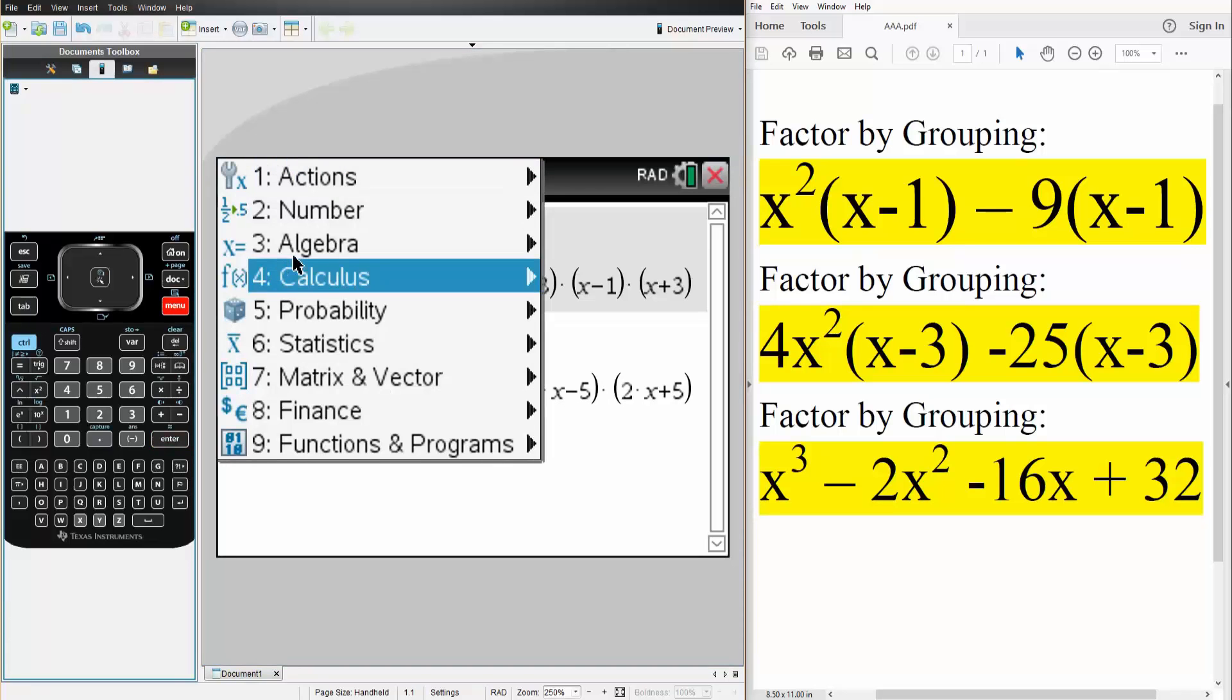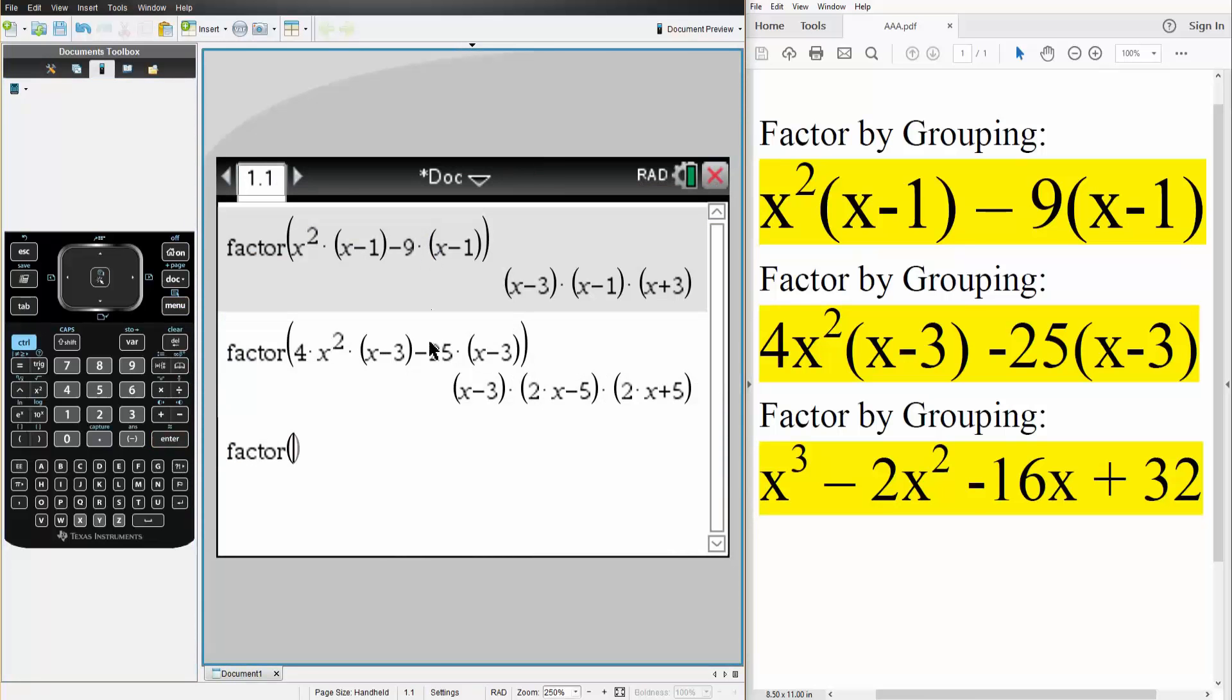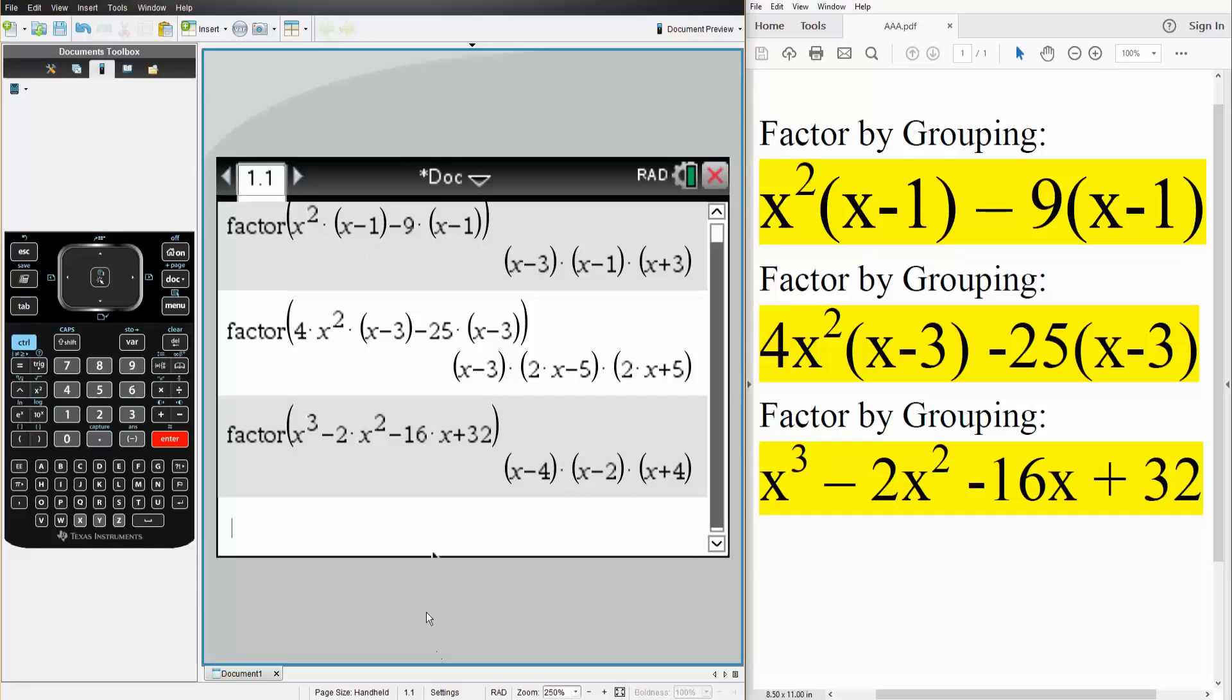Last problem, menu, 3 algebra, 2 factor. We write what we have, so we have x cubed minus 2 times x squared minus 16 times x plus 32. We hit enter, and this is the answer that is completely factored. And that's all you need to do to factor using the TI inspire.